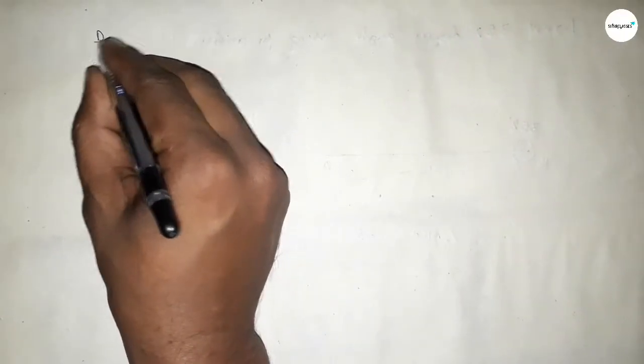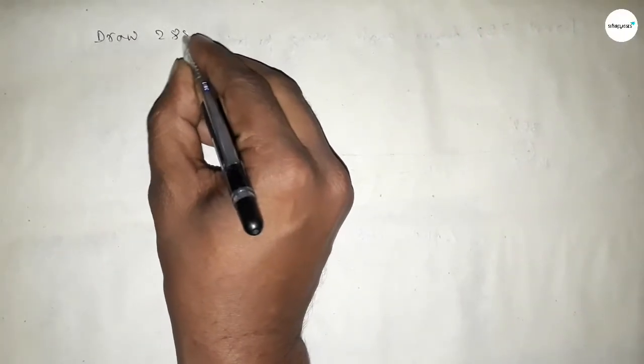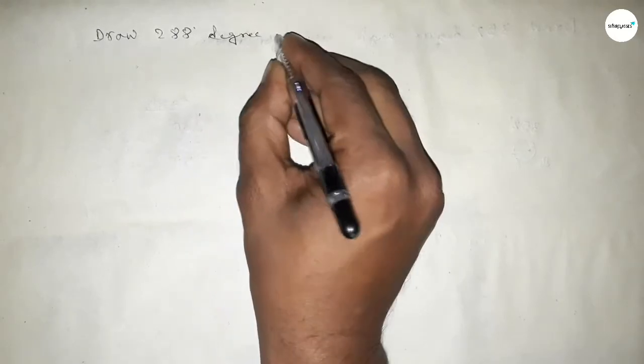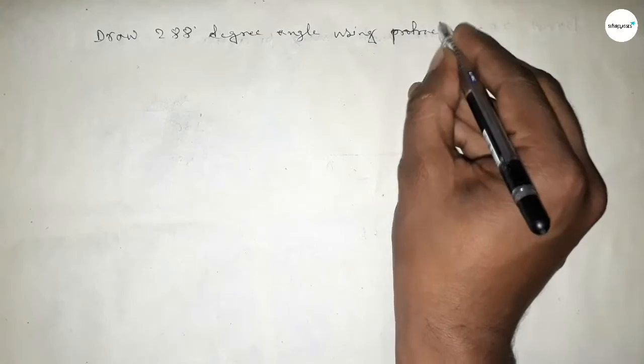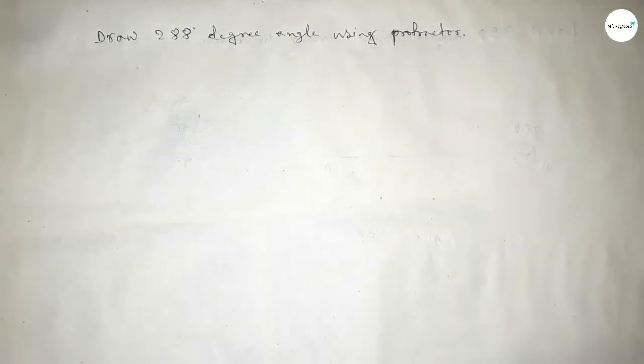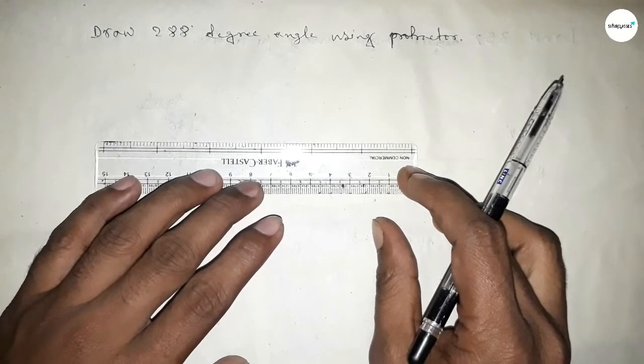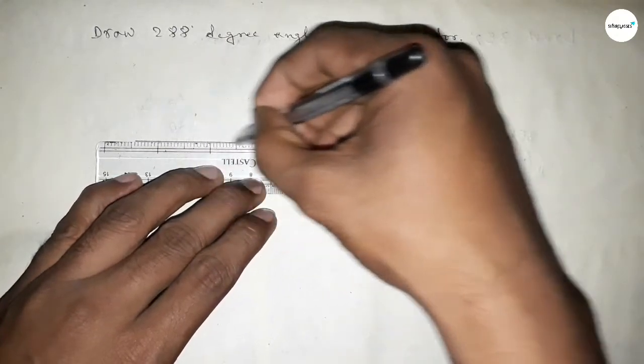Hi everyone, welcome to SI Share Classes. Today in this video we have to draw a 288 degree angle by using protractor. So let's start the video. First of all, we have to draw here a straight line of any length.